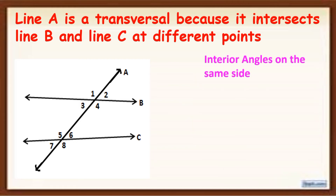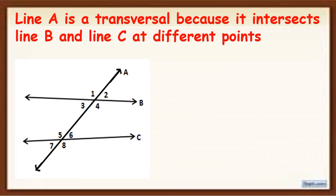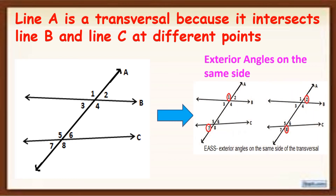Next are the interior angles on the same side of the transversal — they must be on the same side. Those are 3 and 5, and 4 and 6. Next are the exterior angles on the same side of the transversal. The answer is 1 and 7, and 2 and 8.